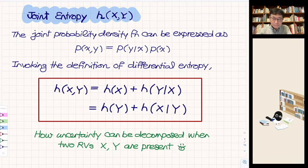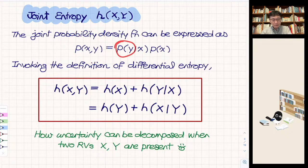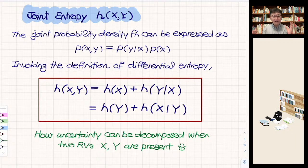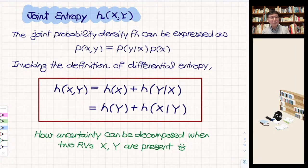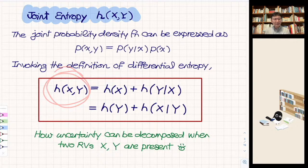If X and Y are independent random variables, meaning the conditional probability of Y equals p(Y), then the joint probability is simply p(X) times p(Y) — that is the special case for two independent random variables. Inspired by this, we should be able to define the joint entropy H(X,Y) corresponding to the information content of the joint probability p(X,Y).